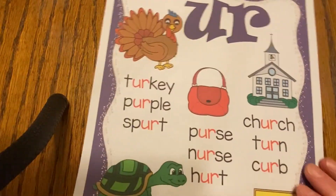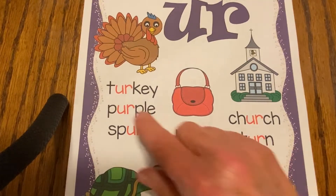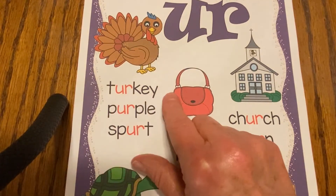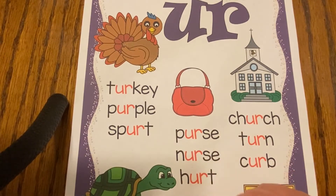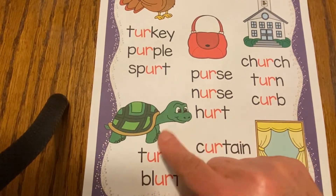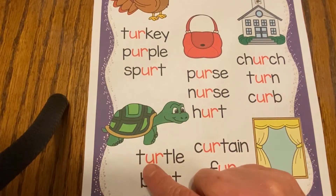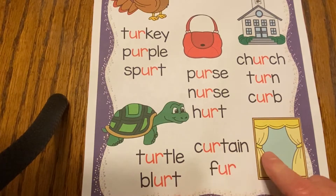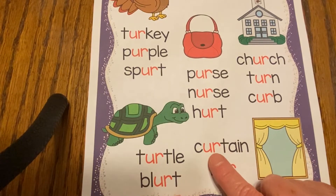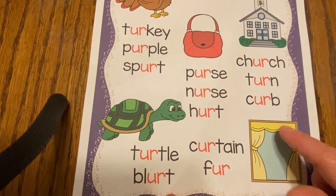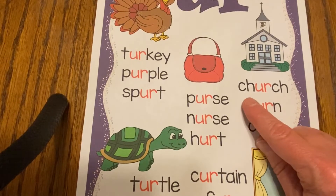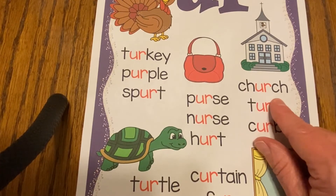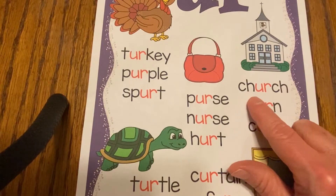All right, the last of the triplets: the U-R. T-U-R-K-E-Y. Turkey. P-U-R-S-E. Purse. What about this one — C-H-U-R-C-H? Six letters but only three sounds. Church.